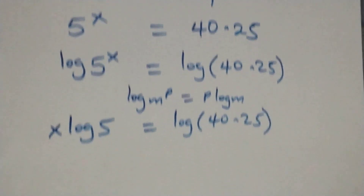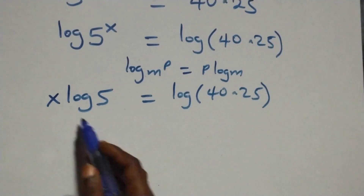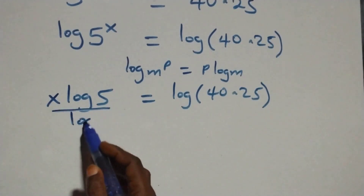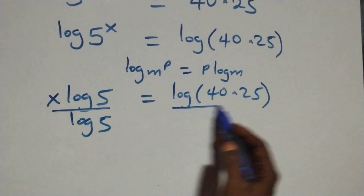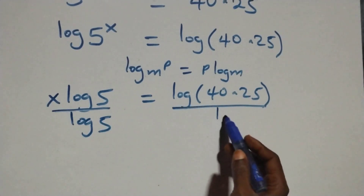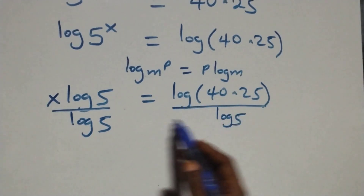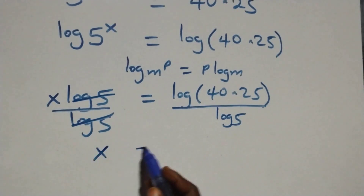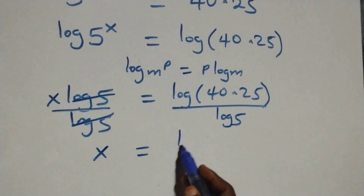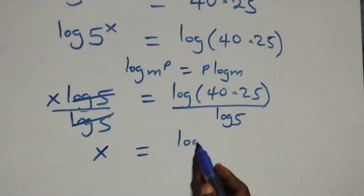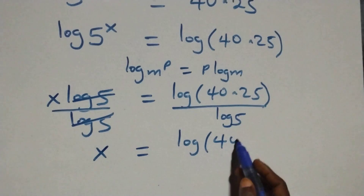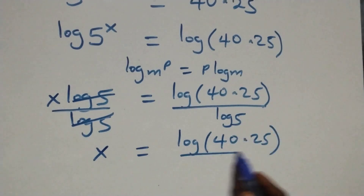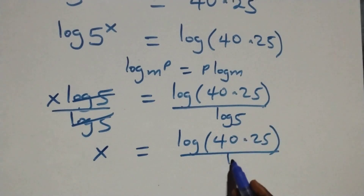We divide both sides by log five. The log five terms cancel each other, giving us x equals log of forty times twenty-five over log five.